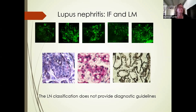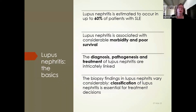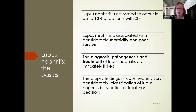Today, diagnosing either lupus nephritis or idiopathic full house glomerulonephritis is the topic. Lupus nephritis is estimated to occur in up to 60 percent of patients with SLE, is associated with considerable morbidity and poor survival, and the diagnosis, pathogenesis, and treatment are intricately linked. We all know that biopsy findings may vary considerably, which is why we have this classification.